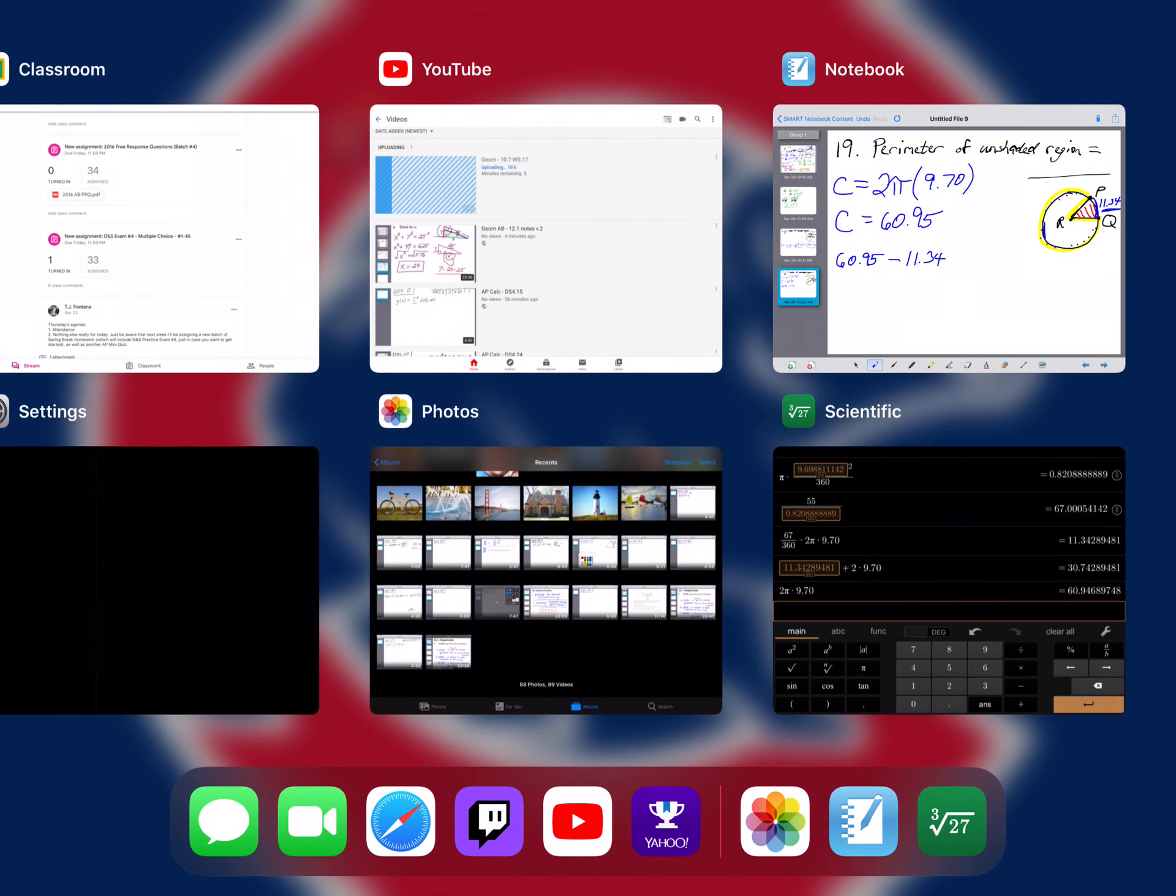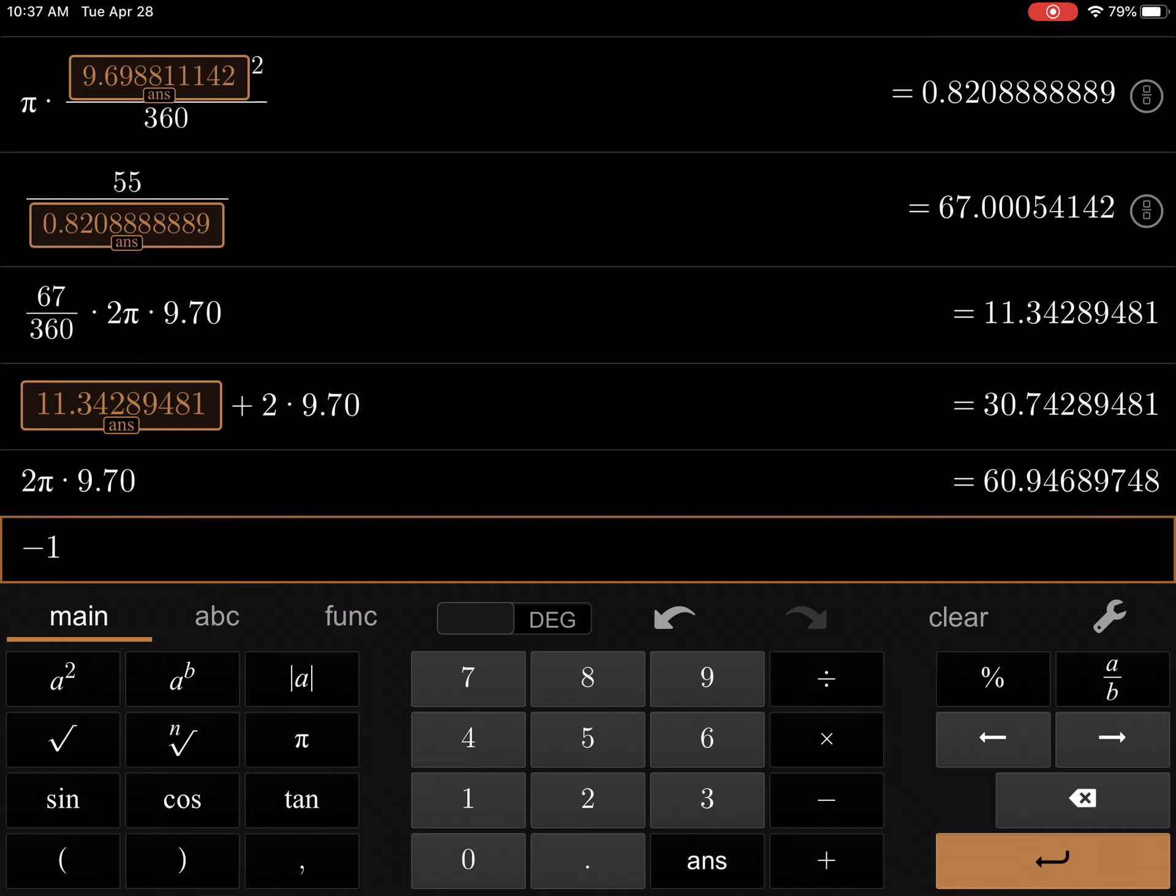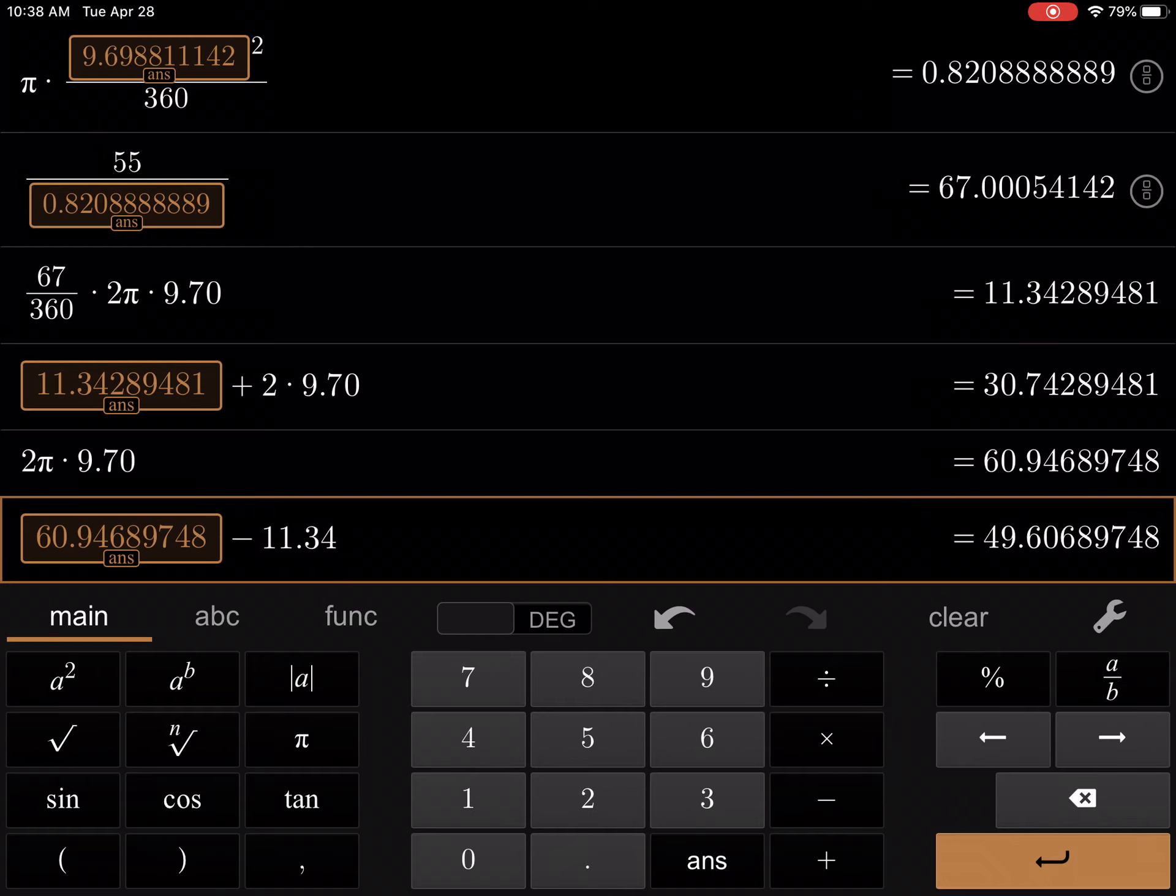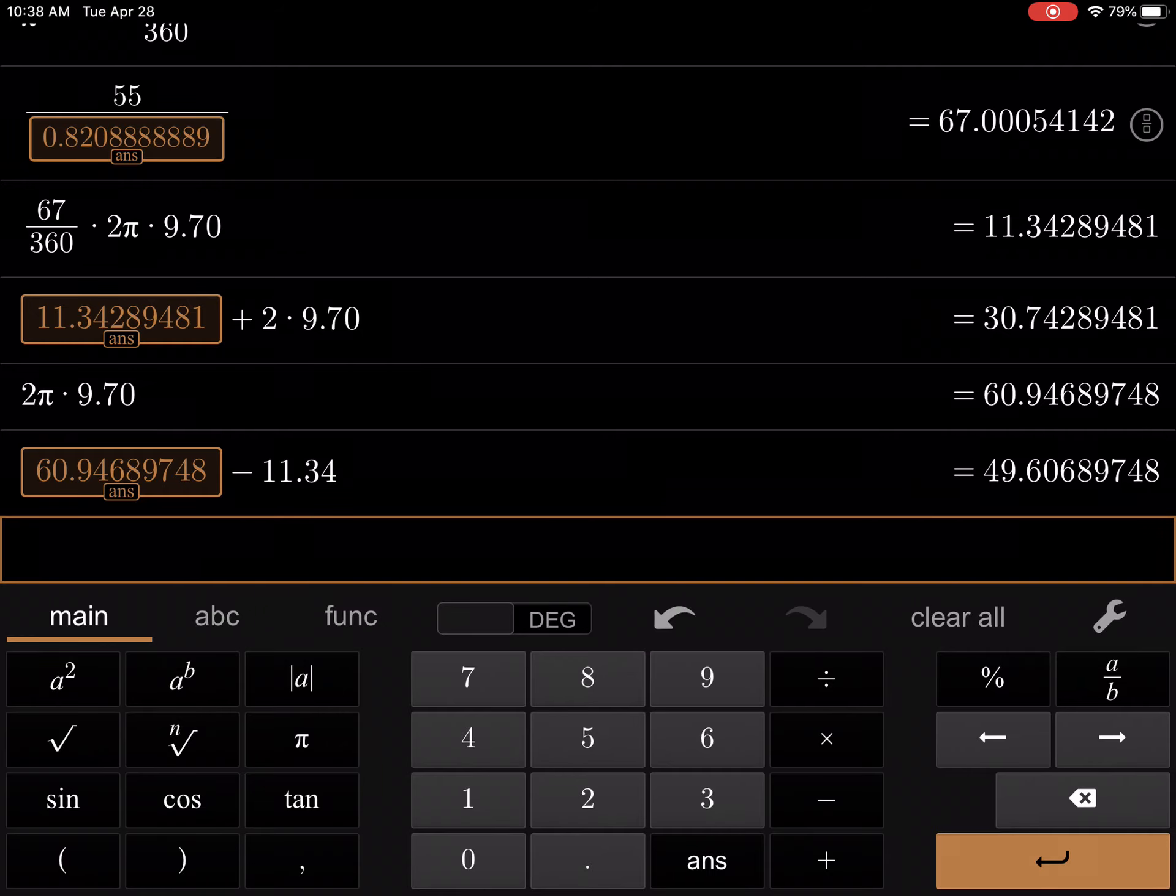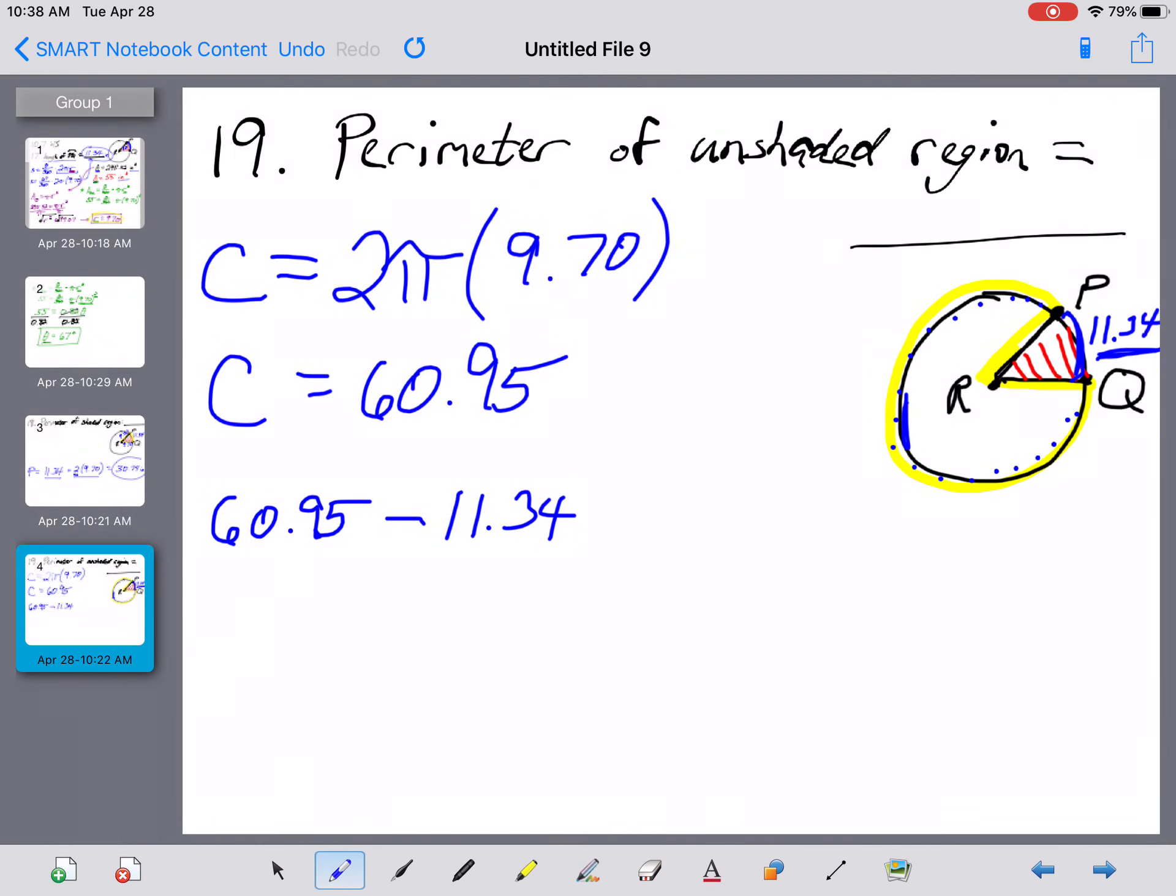So the 60.95 that we had right there minus the... I forgot to hit answer right here. This calculator doesn't work that way. Okay, that minus the 11.34 that we don't want gives us 49.61 for the arc that we do want here. 49.61.